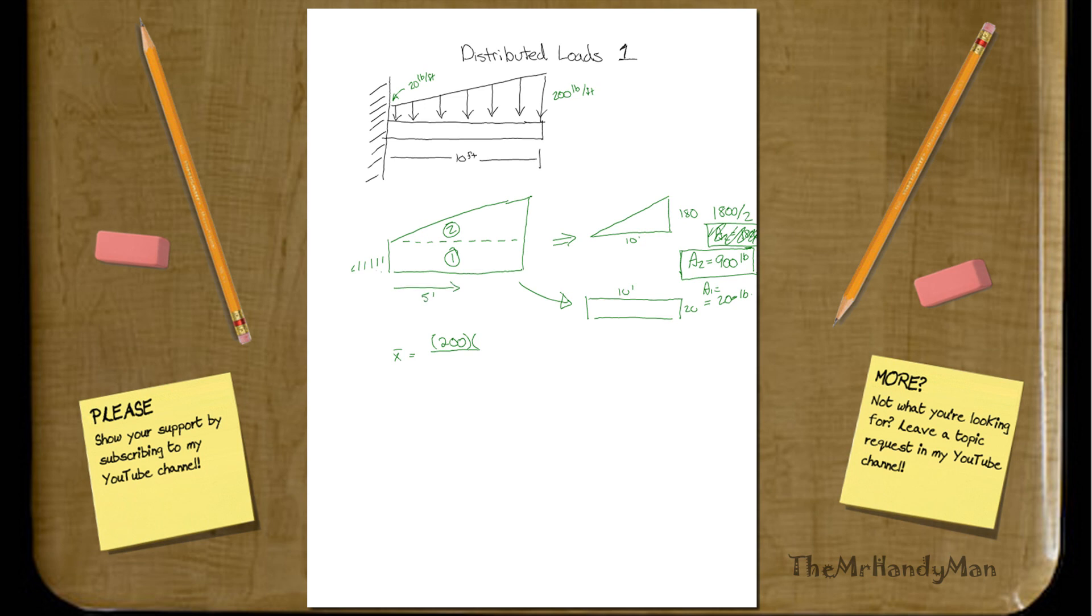So that's 5, plus the area of A2 area, will be 900, times the distance, which is going to be 2 thirds the way. 2 thirds the long way here, so it'll be 2 thirds from the point, considering this is the point, 2 thirds this way, right?